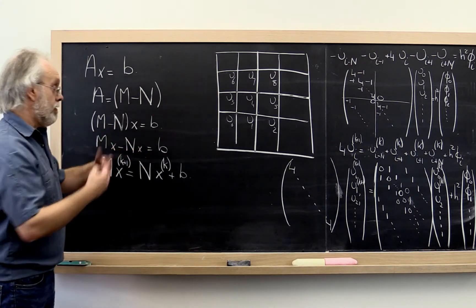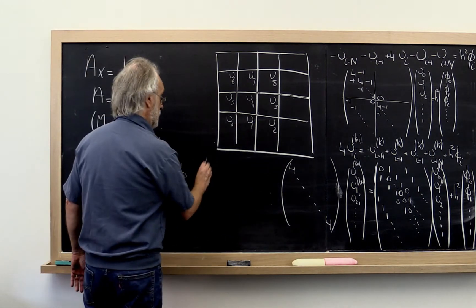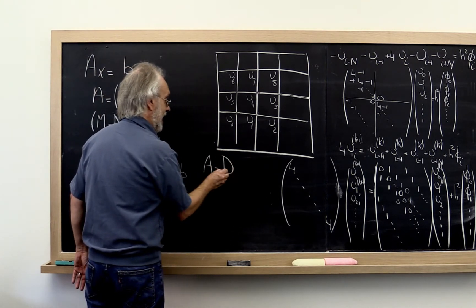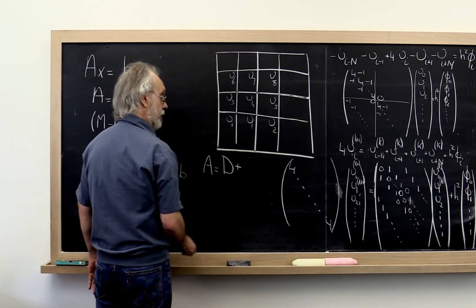Now, in our example right here, we have this matrix A. And what we did was we wrote it as the diagonal plus the off diagonal entries.